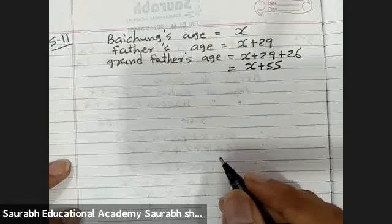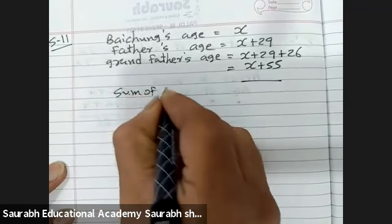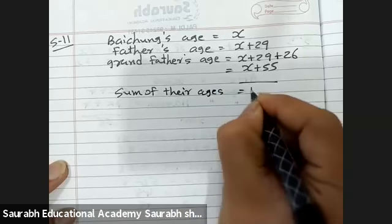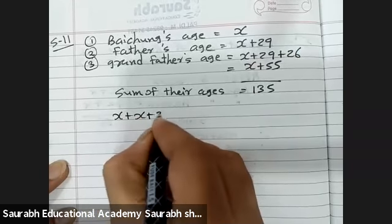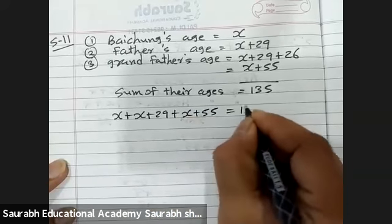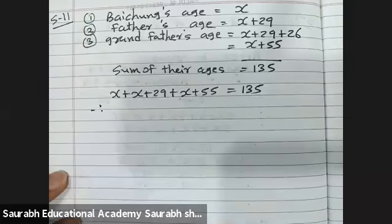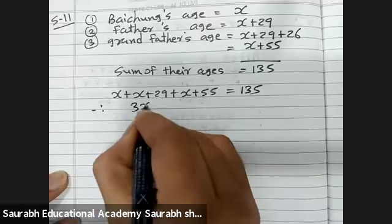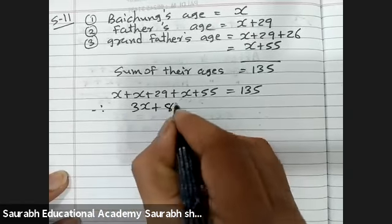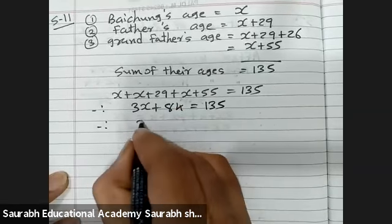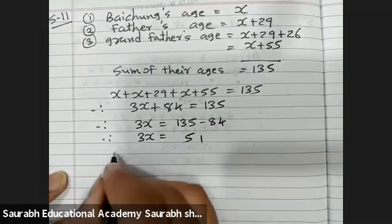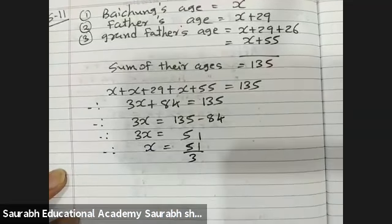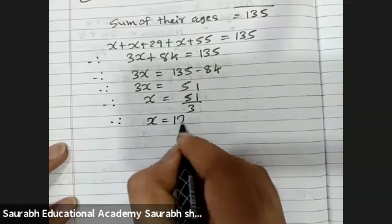The sum of their three ages is 135. So x plus (x plus 29) plus (x plus 55) equals 135. That gives 3x plus 84 equals 135. Therefore 3x equals 135 minus 84, which is 51. So x equals 51 divided by 3, giving x equals 17 years. Baichung himself is 17 years old.